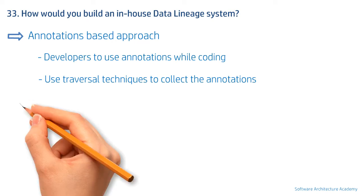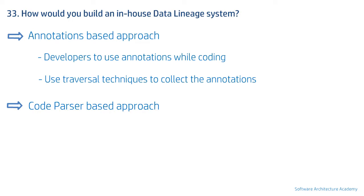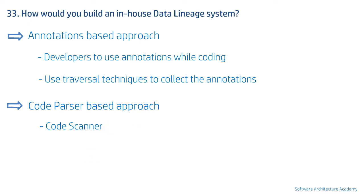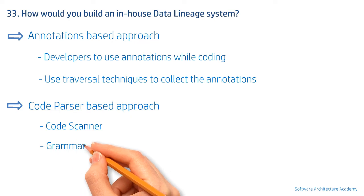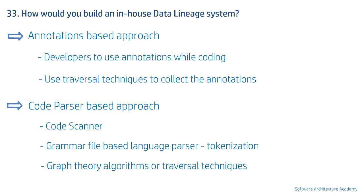The disadvantage is that since it depends on developers manually adding annotators, it's prone to errors or misses. The second method is the code parser-based approach, which is more complex but very effective if done right. You would write a generic code scanner to scan code across different languages, then write a language parser for each language using a grammar file to tokenize. Finally, use traversal techniques to walk the tokens, pick relevant nodes, and apply graph theory algorithms to connect the dots.